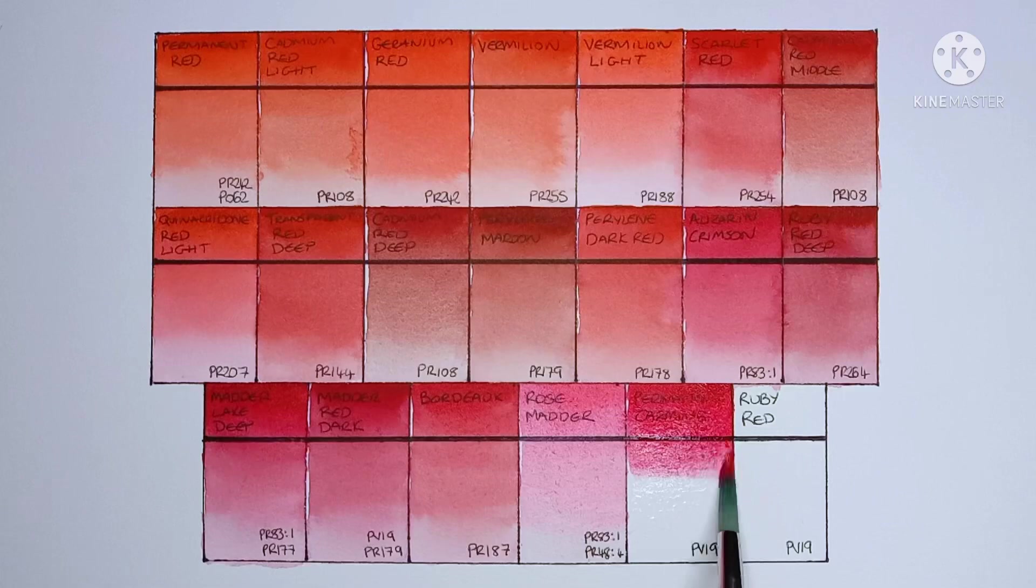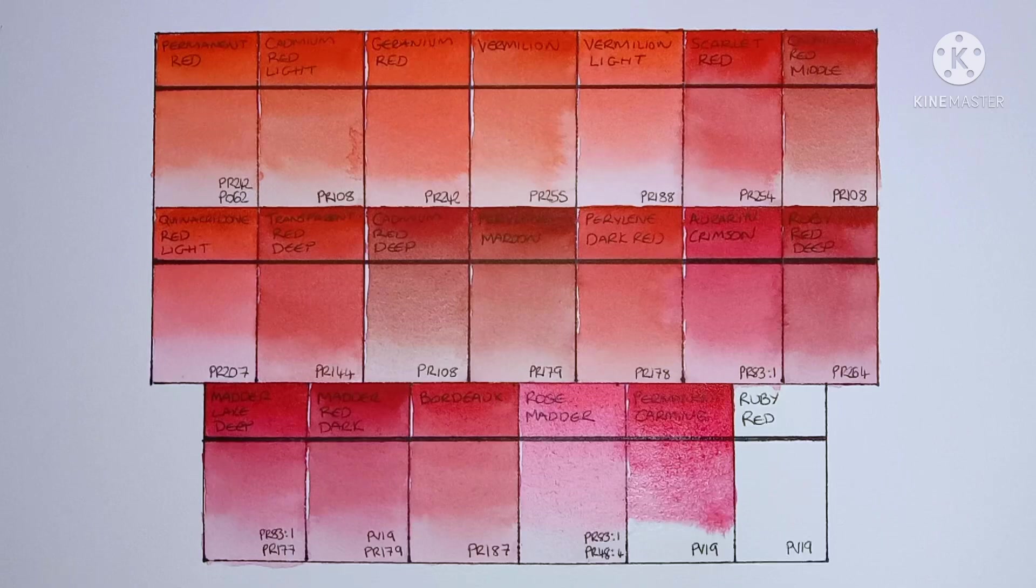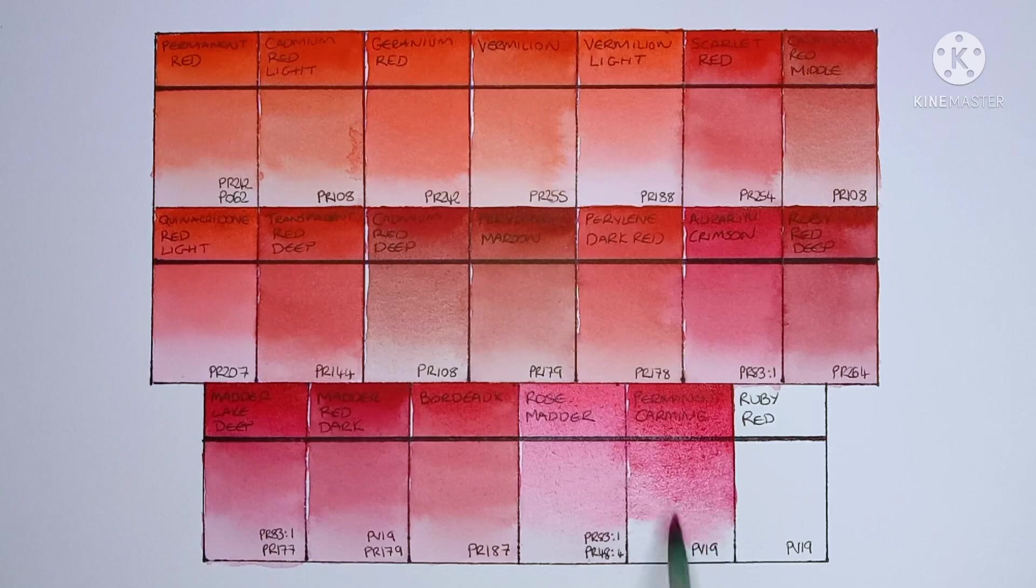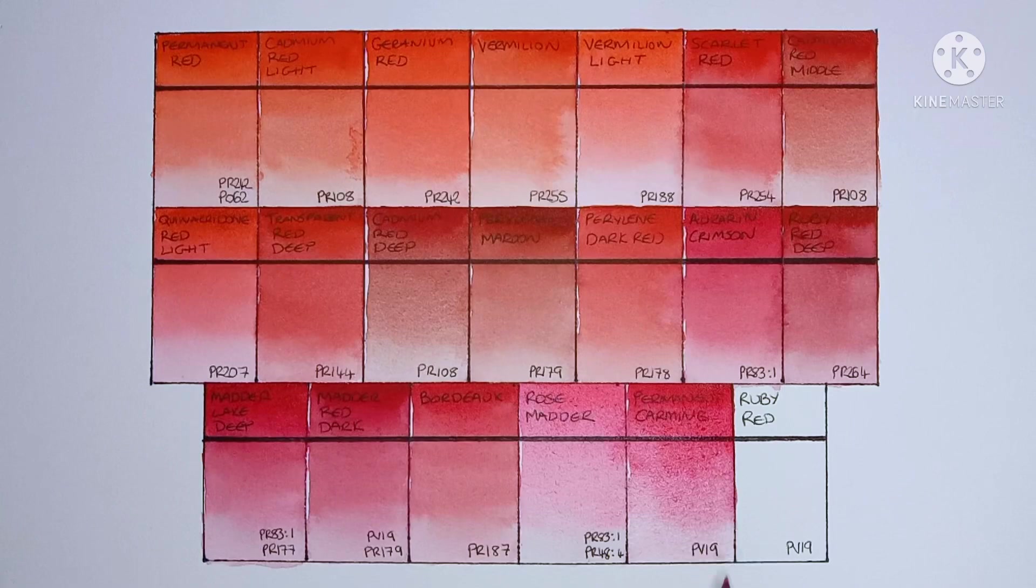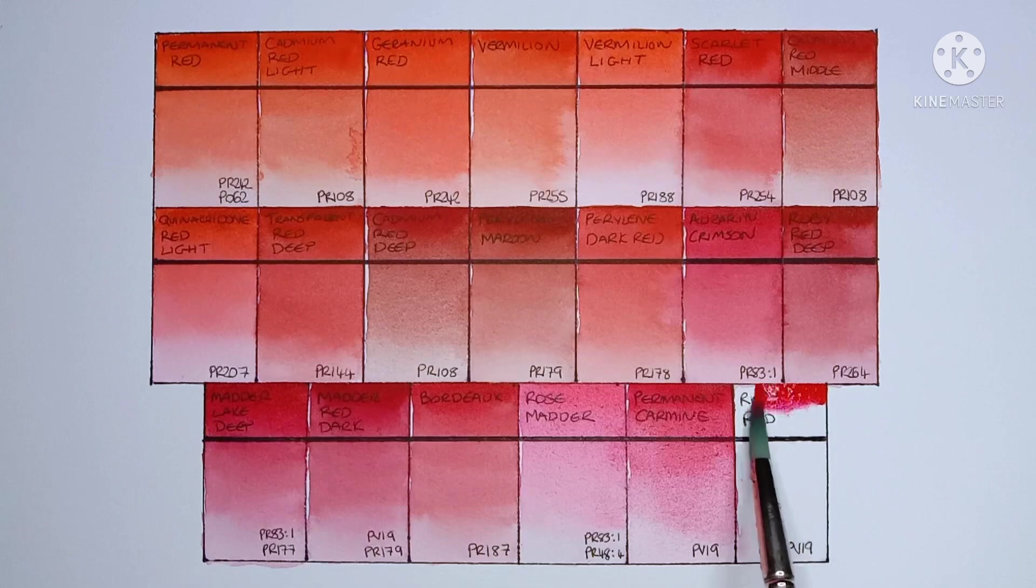And next up is permanent carmine, made from PV19. So this is the Schmincke red I'm most familiar with. I've had a half pan of it for quite a while now. And yeah, it's a very good paint, probably be my choice of these cool reds I think.